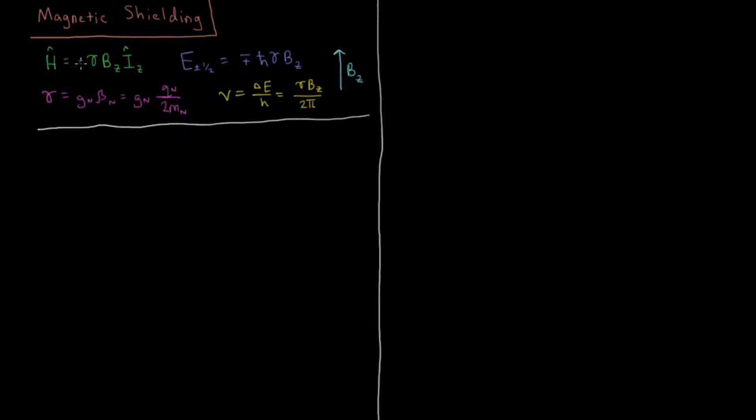That Hamiltonian is minus gamma the magnetic field in the z direction times the z component of the spin angular momentum of the nucleus. That gave us energy levels for the spin for the z component eigenvalue of plus or minus one half for a proton of minus or plus h-bar gamma times the magnetic field in the z direction.